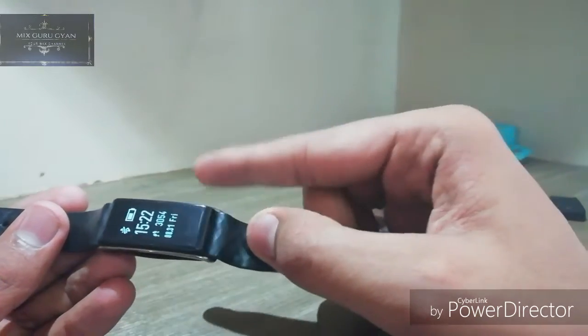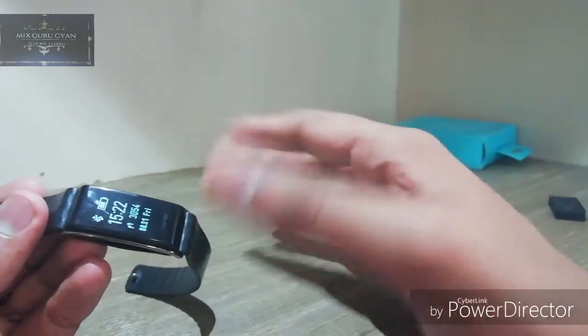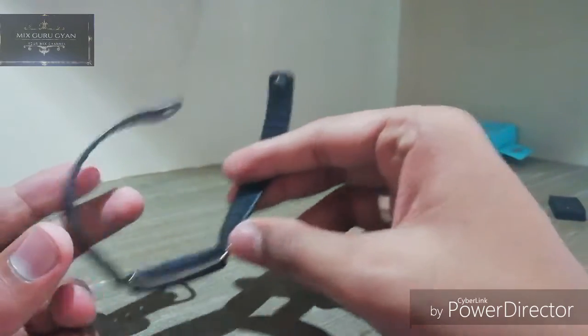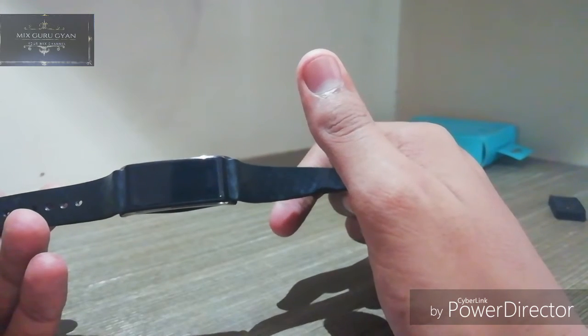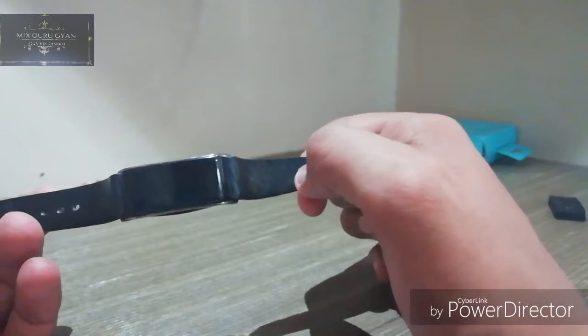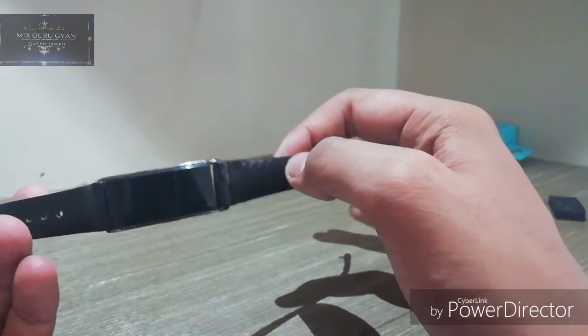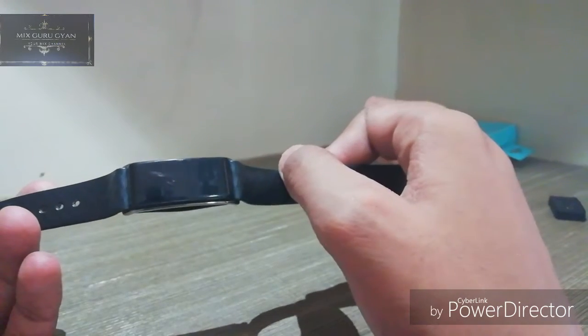And the step counts, they are not accurate, but the time is very good. And the third pro, it has caller notification. Like any call or you have an alarm set and your phone is connected with Bluetooth to the smartphone, it will give vibration. It will give so much vibration that you will know that in your hands something is vibrating.